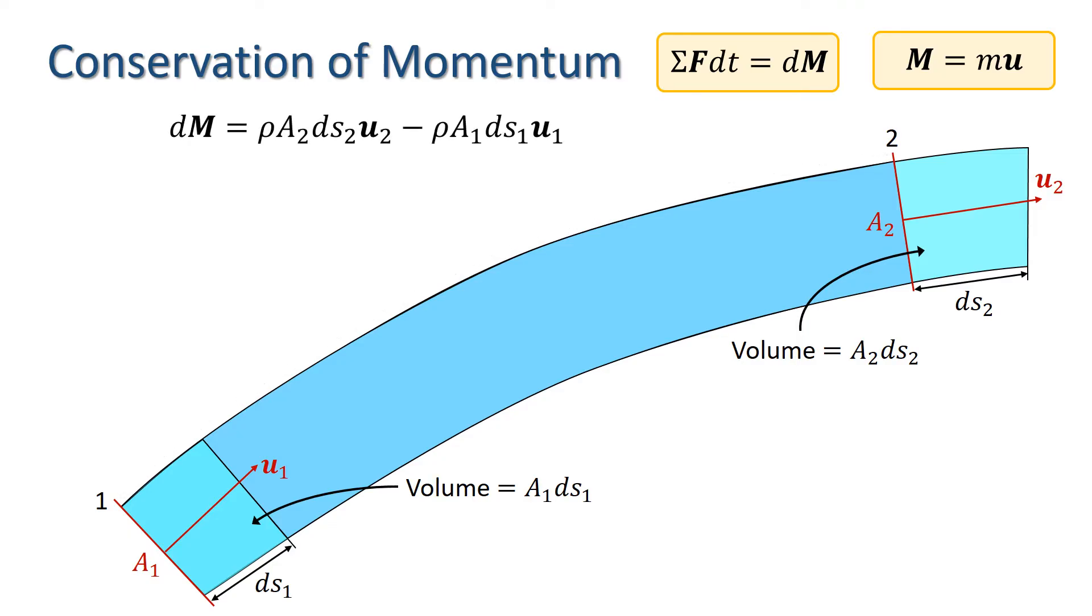The change of momentum dM is given by mass times velocity on the right hand side minus mass times velocity on the left hand side where the mass on the right is rho times A2 ds2 and on the left is rho times A1 ds1. We can now apply the impulse momentum equation and equate this to the sum of the forces times dt.